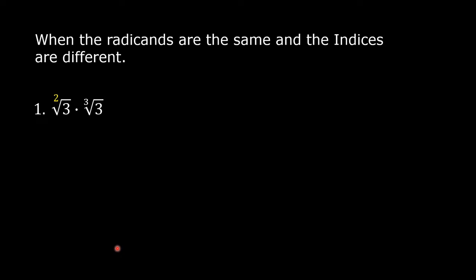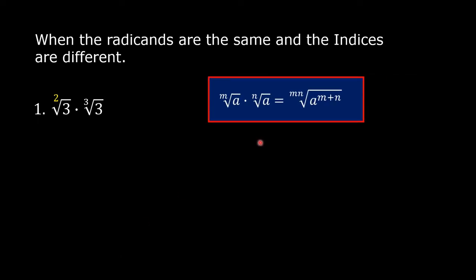To multiply this, just follow this rule: the m-th root of a times the n-th root of a is equal to the (m times n)-th root of a raised to (m plus n). So just multiply the indices and then raise a to m plus n.